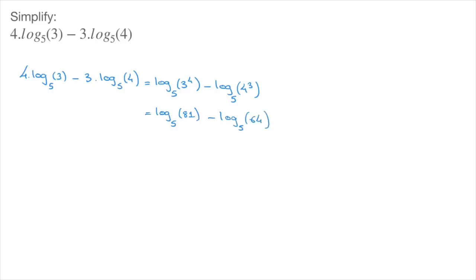We now have two logarithms, and they are both written in the same base, which is 5. Furthermore, the second logarithm is being subtracted from the first, so we can use the subtraction rule for logarithms to state that this equals log base 5 of 81 over 64. And that's the final answer — we've just simplified this logarithmic expression.